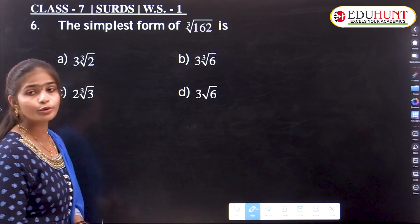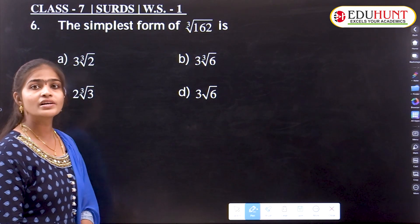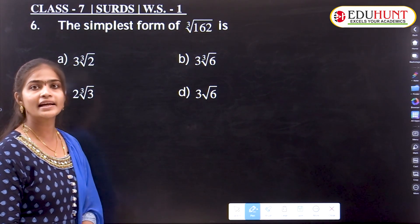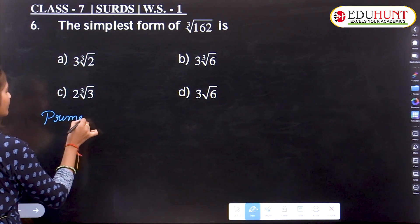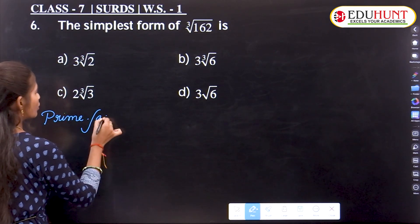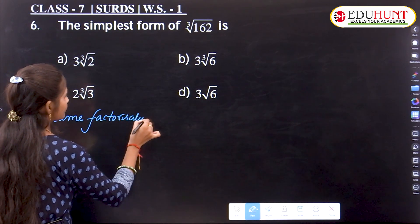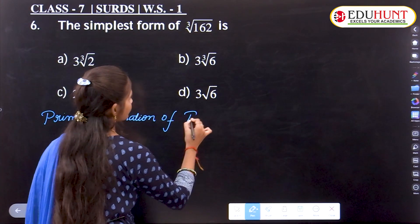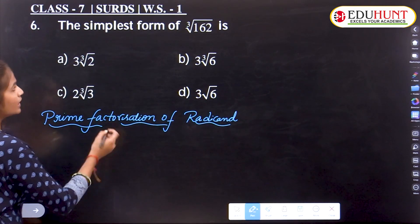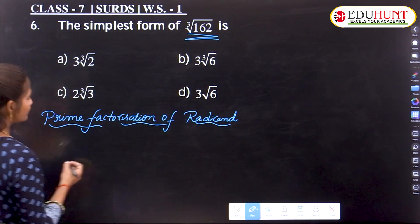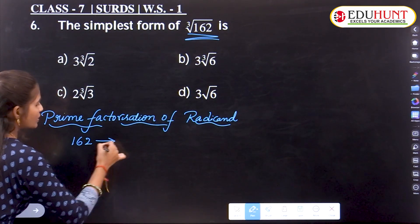The next problem: find the simplest form of cube root of 162. When this type of problem is given, we first need to take the prime factorization of the radicand. So the radicand here is 162.